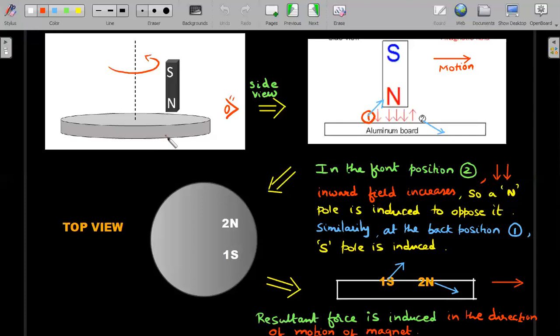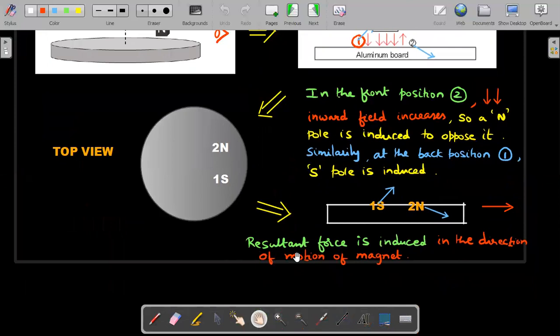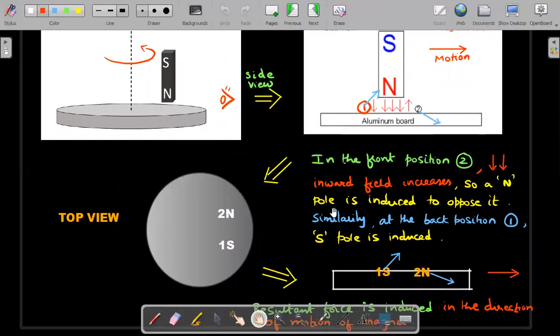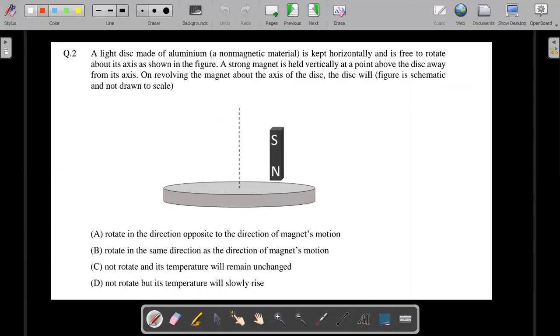which means at every new position, the same thing repeats. And therefore, the disk is supposed to rotate in the same sense as the bar magnet. So the resultant force is induced in the direction of motion of magnet and that's the required solution. So go back and let's check the best possible option among the four would be this one.